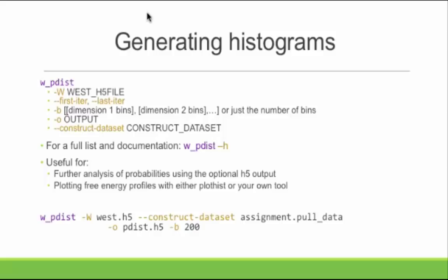The first tool is WPDIS, which actually generates histograms. This is only a select set of options. If you want to see the entire documentation, what you want to do is write `source loadenv.sh`. There's a loadenv environment script. You can source that and then run `WPDIS --h`, which gives you the entire documentation of every option. I'm not going to go through every option — just some of the major ones.